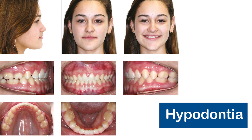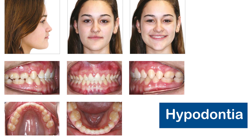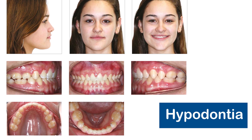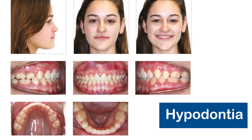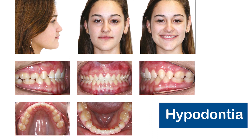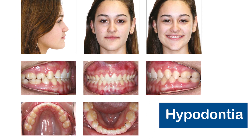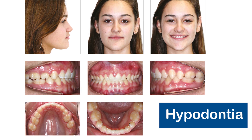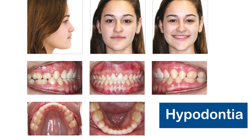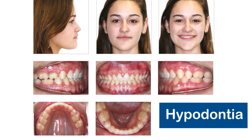Due to enamel hypoplasia, there is an increased chance of dental caries. As pulp chambers are large, caries easily involve the pulp causing pulpitis, which requires endodontic treatment. Delayed eruption and hyperdontia cause malposition and have to be treated by orthodontics.